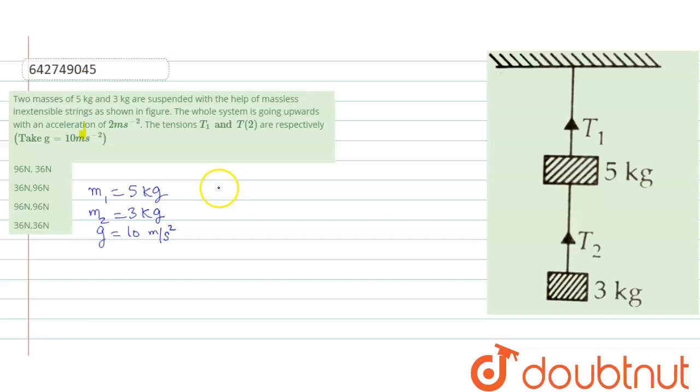First we will write equation for T1 for 5 kg. That is T1 minus (m1 plus m2) into g equal to (m1 plus m2) into a, because acceleration is downward.